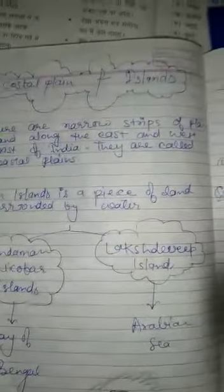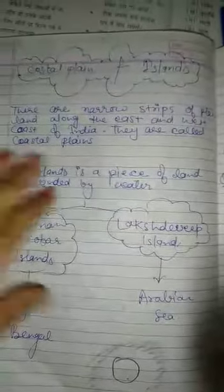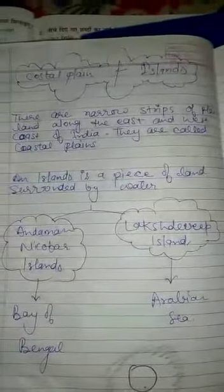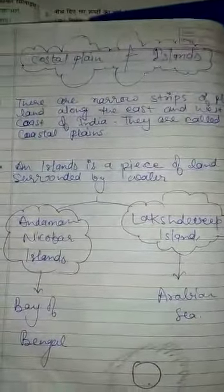Now, coastal plains and islands. There are narrow strips of plain land along the east and west coast of India — they are called coastal plains.